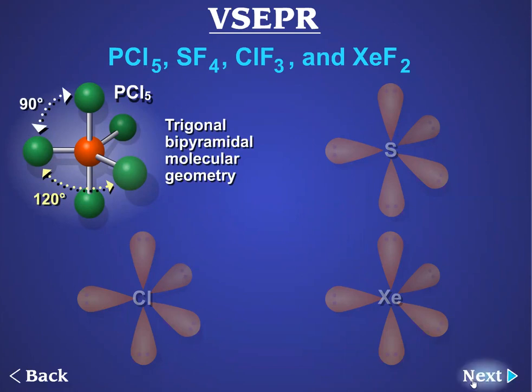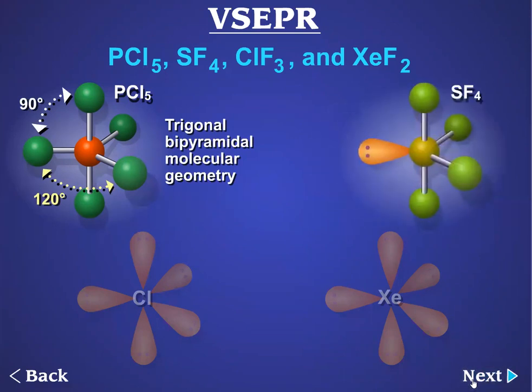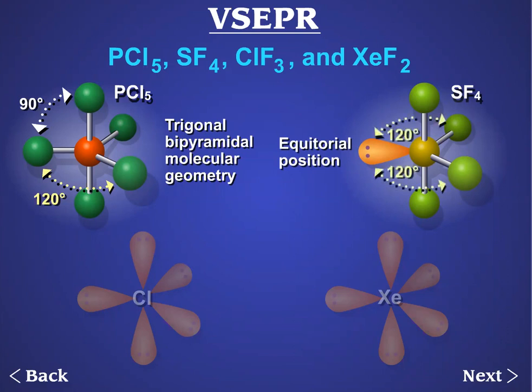In SF4, there are four bonding pairs of electrons and one lone pair. Lone pairs in a trigonal bipyramidal electron pair arrangement will occupy equatorial positions rather than axial positions. In SF4, if the lone pair is equatorial, there are two bonding pairs at 120 degrees and two more at 90 degrees.